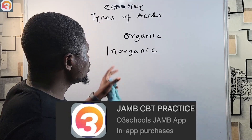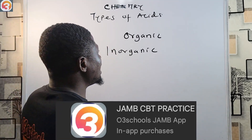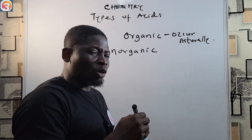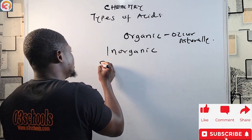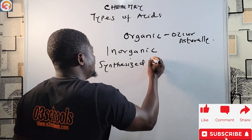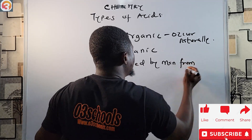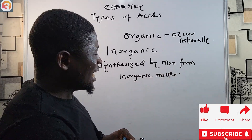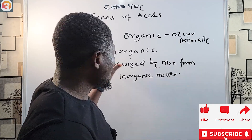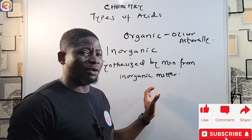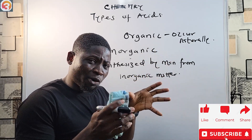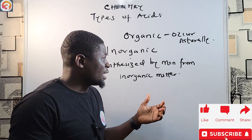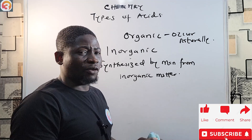Organic acids occur naturally — you can find them in fruits, vinegar, plants, and so on. Inorganic acids, on the other hand, are synthesized by man from inorganic matter.